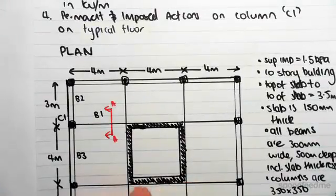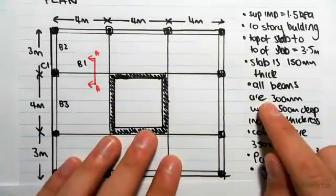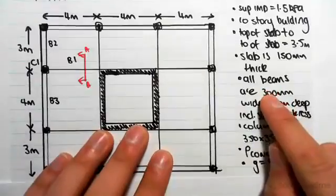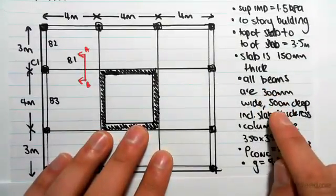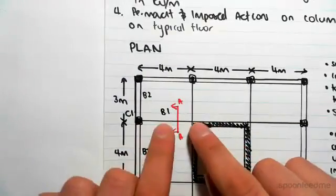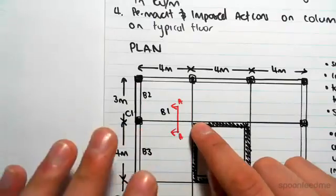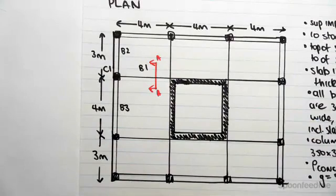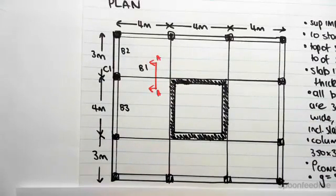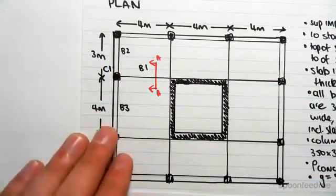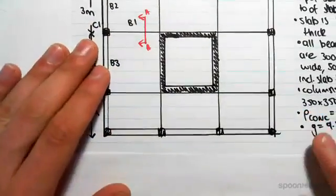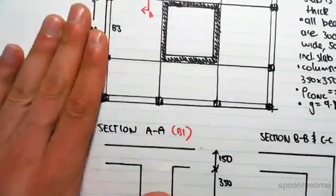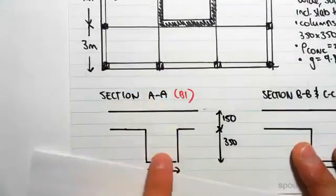Even though all the beams are the same dimensions — 300 by 500 — I'm still denoting B1, B2, and B3 as different. Even though they're technically all the same, we're going to treat them differently. It might not be so obvious now, but when we go into the actual example you'll see why it's important to distinguish B1, B2, and B3. Just to show you what a section would look like — a typical section AA would be this beam.